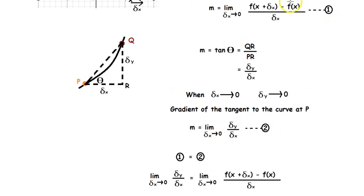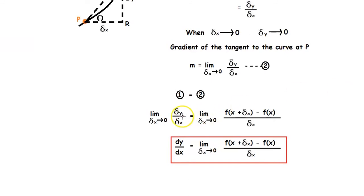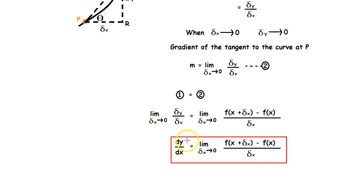Now we equate equation 1 and equation 2. This gives us: the limit of delta y / delta x as delta x tends to 0 equals the limit of [f(x + delta x) − f(x)] / delta x as delta x tends to 0. The term 'limit of delta y / delta x as delta x tends to 0' can be written as dy/dx, which means the derivative of y with respect to x. This is the general formula for the derivative of a function, and now we have entered the world of differentiation.